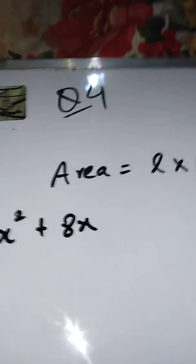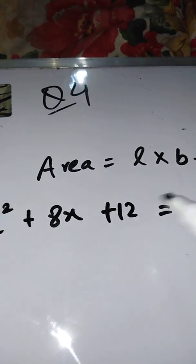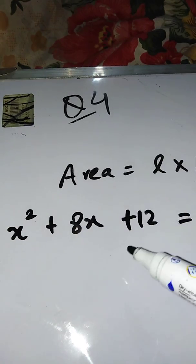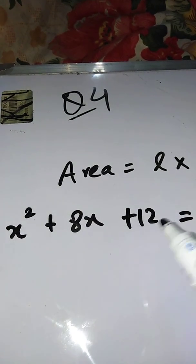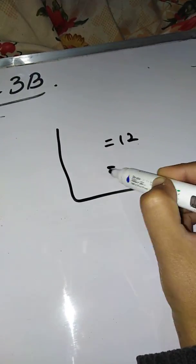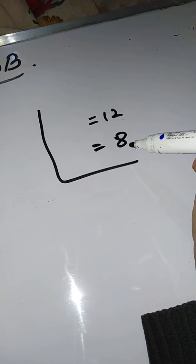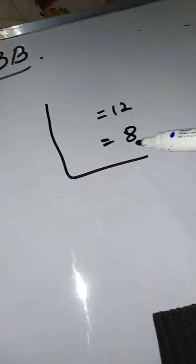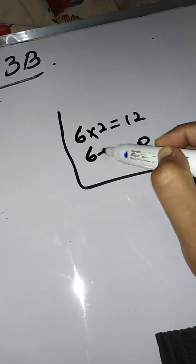Now solve it and make the factors. Multiply the first and last number: 1 times 12 equals 12. The middle number is 8, so we need two factors that multiply to 12 and add to 8. The two factors are 6 and 2. 6 times 2 equals 12, and 6 plus 2 equals 8.